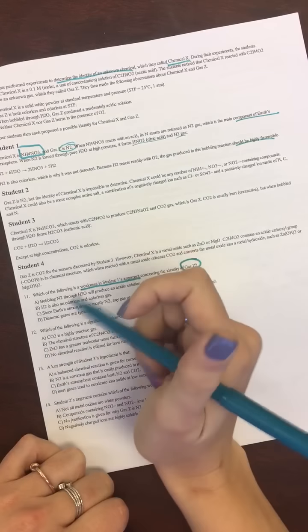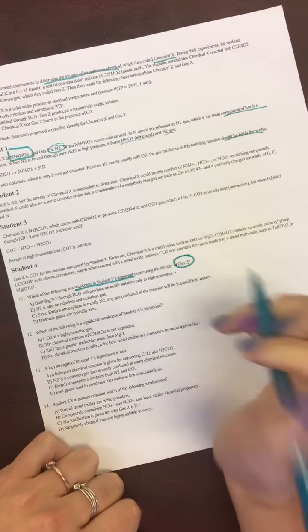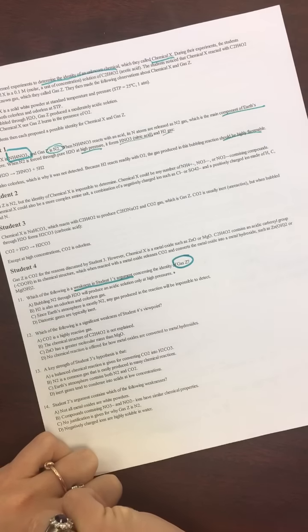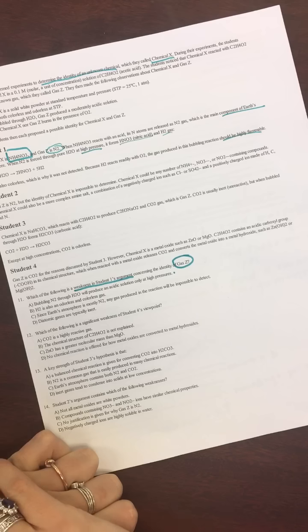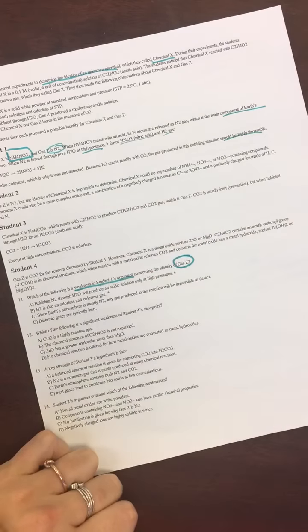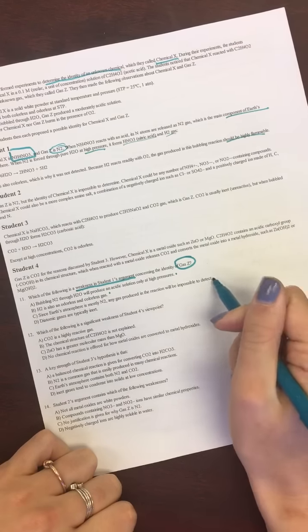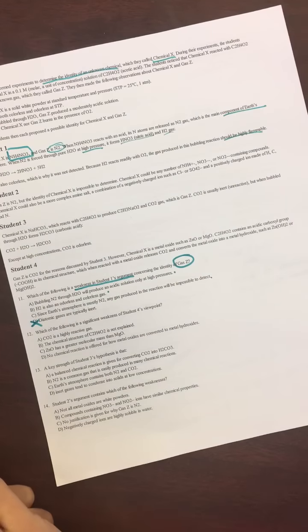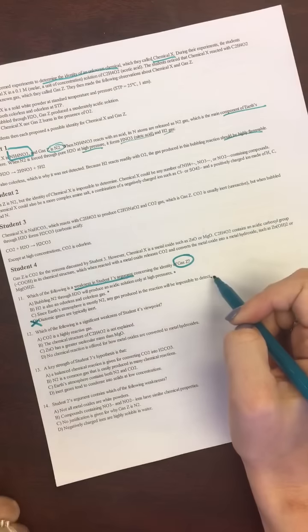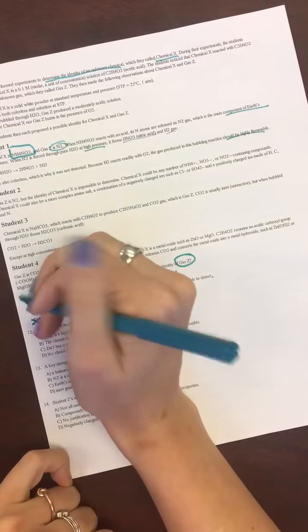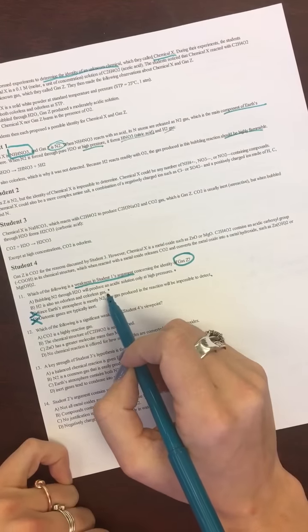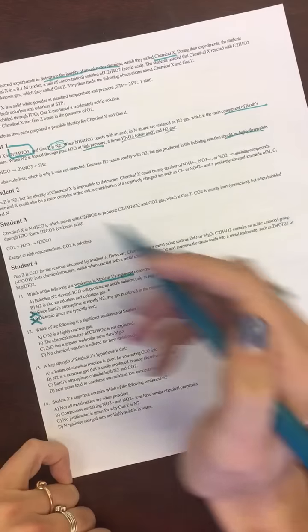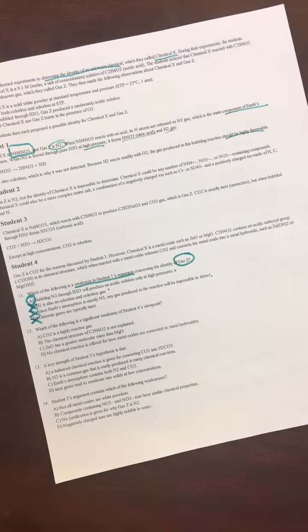So, let's figure this out. Bubbling N2 through H2O will produce an acidic solution only at high pressures. Well, it says high pressure right here, so we'll leave that in there. H2 is also an odorless and colorless gas. Maybe they do talk about that. Since Earth's atmosphere is mostly N2, any gas produced in the reaction will be impossible to detect, and diatomic gases are typically inert. Well, we don't talk about that at all. That requires chemistry knowledge, so we can go ahead and cross off D. So, between these two, which ones would be a weakness? So, we detect it, not because of the atmosphere. So, like, we can't detect it in the atmosphere, which is something that they mentioned, so we're going to cross off C.